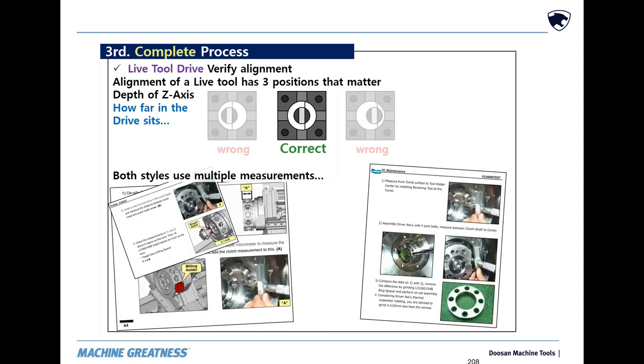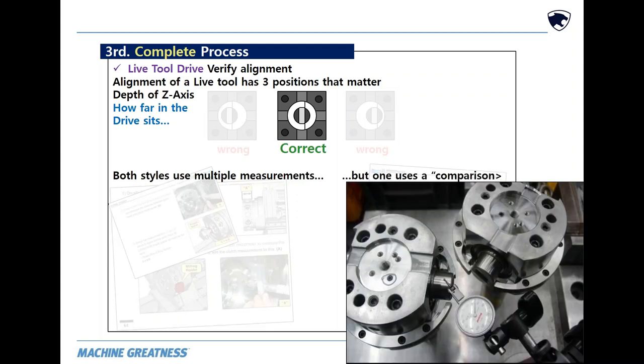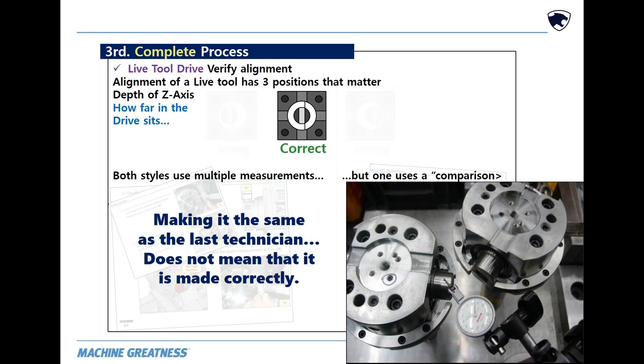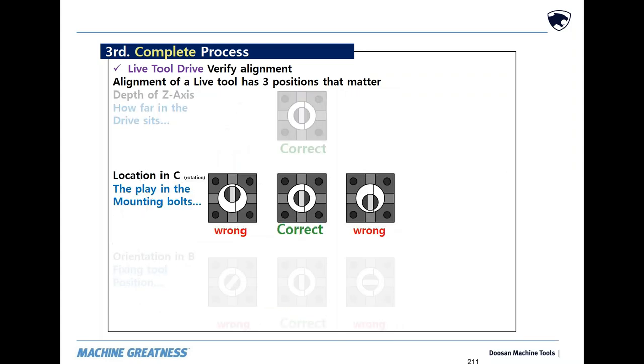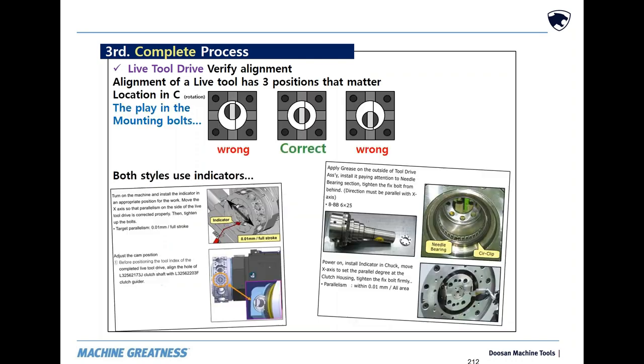Both styles, front and rear, have similar ways to measure it for a correct fit. However, one uses a comparison to what was there before, and how it was might be what you are trying not to achieve. Once the depth into Z is set with a correctly sized spacer, then the location that the drive radially gets locked down to gets indicated. Even if the drive was correct and was only removed, this must still be done.